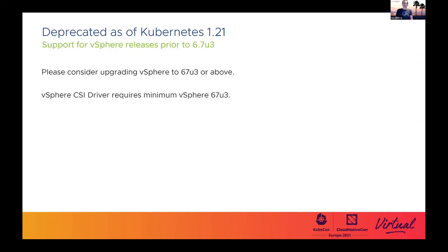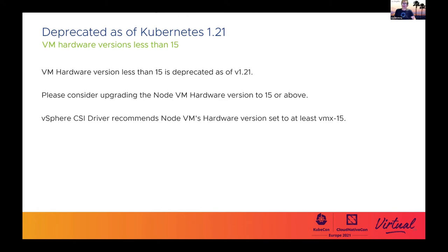A formal deprecation notice is now being issued indicating that versions of vSphere prior to 6.7 U3 will be dropping out of support in the future. Also reaching the end of support window is VM hardware version 15. If you're running your Kubernetes nodes on something prior to that, it's time to move them to more modern homes.